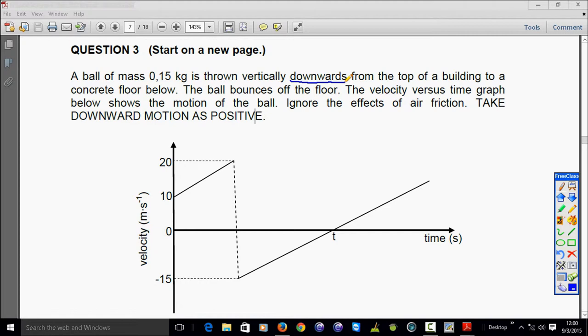The velocity versus time graph below shows the motion of the ball. It's very important that when you get a graph to look at what type of graph you are working with. So we have a velocity time graph. We are looking at how the velocity changes and they also tell us we have the bounce. If you can remember this dotted line will show us the bounce of the ball because in a very short time the velocity of the ball will change.